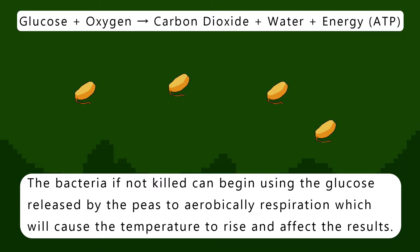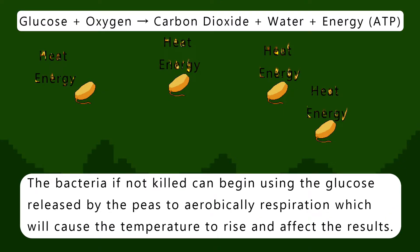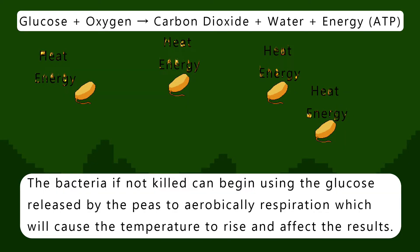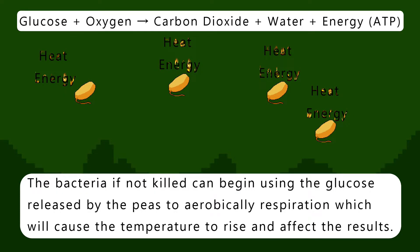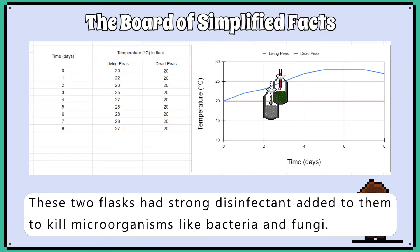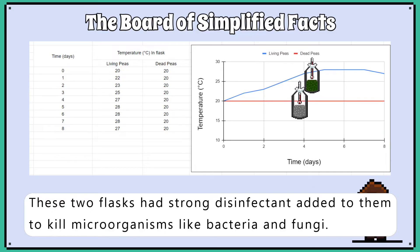The disinfectant is used to kill any microorganisms like bacteria. The bacteria, if not killed, can begin using the glucose released by the peas to aerobically respire themselves, causing the temperature to rise and affect the results.